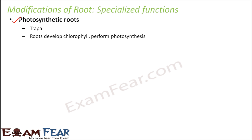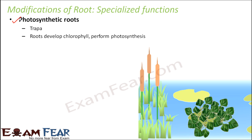Let us look at an example. Trappa is an example of such plants. If I say in Hindi, we generally call it as singkhara in India. So in this kind of plant, it is an aquatic plant. Here we see that the roots develop chlorophyll, and whenever chlorophyll is there, they are capable of performing photosynthesis. So here the roots are above the ground.